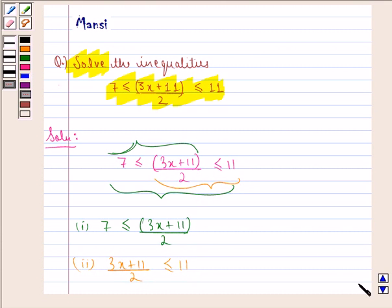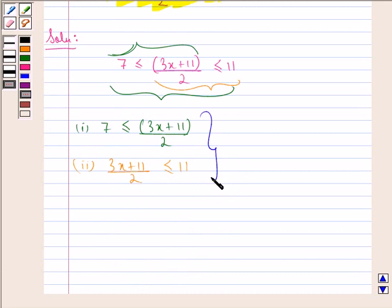Now solving these two inequalities simultaneously we have 7 ≤ (3x + 11)/2 ≤ 11, or 14 ≤ 3x + 11 ≤ 22.